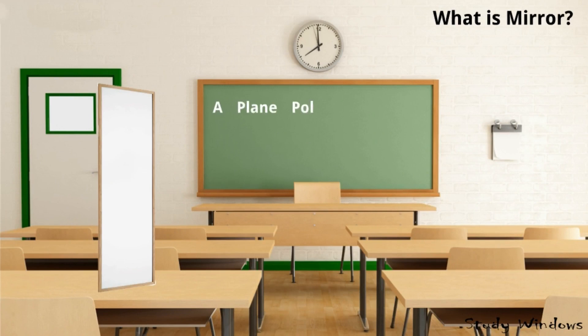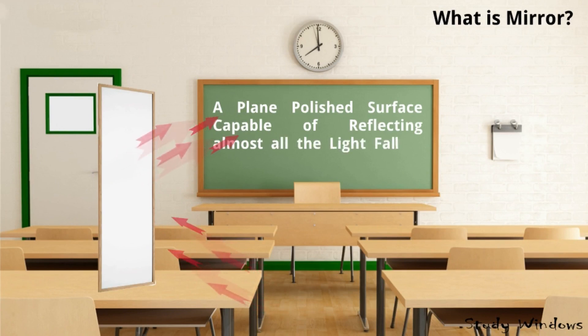So what is a mirror? A plane polished surface capable of reflecting almost all the light falling on it. Look at this plane surface - light rays are falling on the surface and it is bouncing back or reflected back. So this surface is known as a mirror.